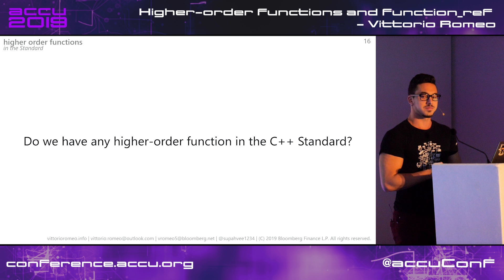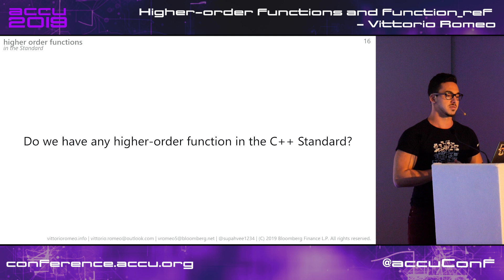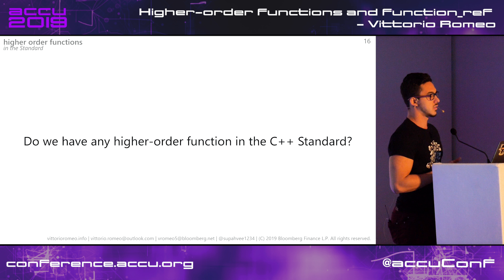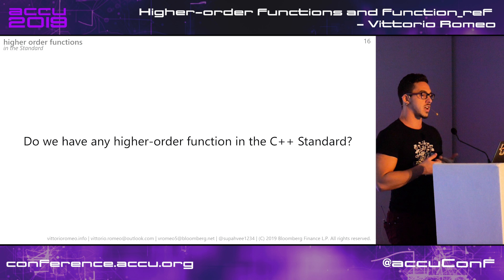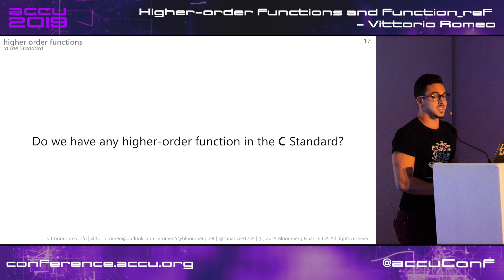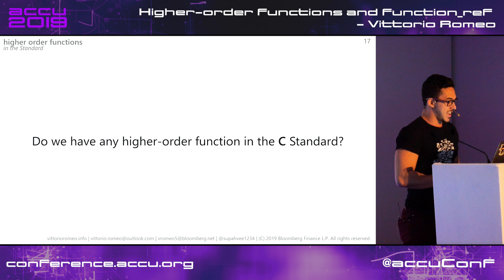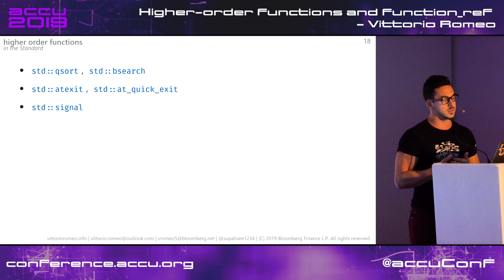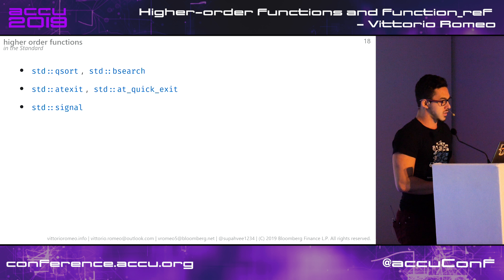Do we have any higher-order functions in the C++ standard? Algorithms are probably the most common example - any algorithm that takes a predicate or an action is a higher-order function. In the C standard, we have qsort and bsearch, which are the algorithms. Then we have functions that take handlers for exiting the program and for signals. Signal is quite interesting - it's a very uncommon example of a higher-order function. The idea is you call the signal function with a signal and provide a handler, which is going to be invoked when the signal is raised by the OS. A specialized case of higher-order functions is what we call callbacks - every callback is a higher-order function.